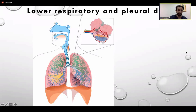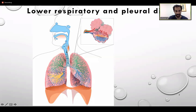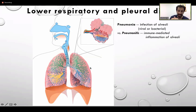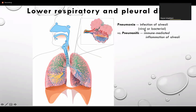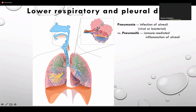In medicine we always talk about lower respiratory and pleural disease because we see them in hospital frequently. Just to remind you about the upper airway, the trachea and the bronchus, going all the way to the small alveoli - we'll take different kinds of lower respiratory infection and each will have a certain name and certain pathology. For example, pneumonia is basically an infection of the alveoli, whether it's viral or bacterial. Alveolitis is again inflammation in the alveoli but it's usually immune-mediated.